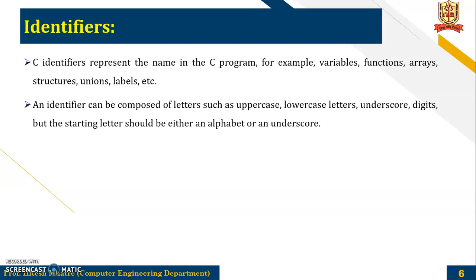An identifier can be composed of a letter such as uppercase, lowercase characters, underscore, digit, but the starting should be either an alphabet or underscore. So whenever you are forming an identifier, it should be alphanumeric and only the special symbol allowed, that is the underscore, but it should always start with an alphabet or an underscore.